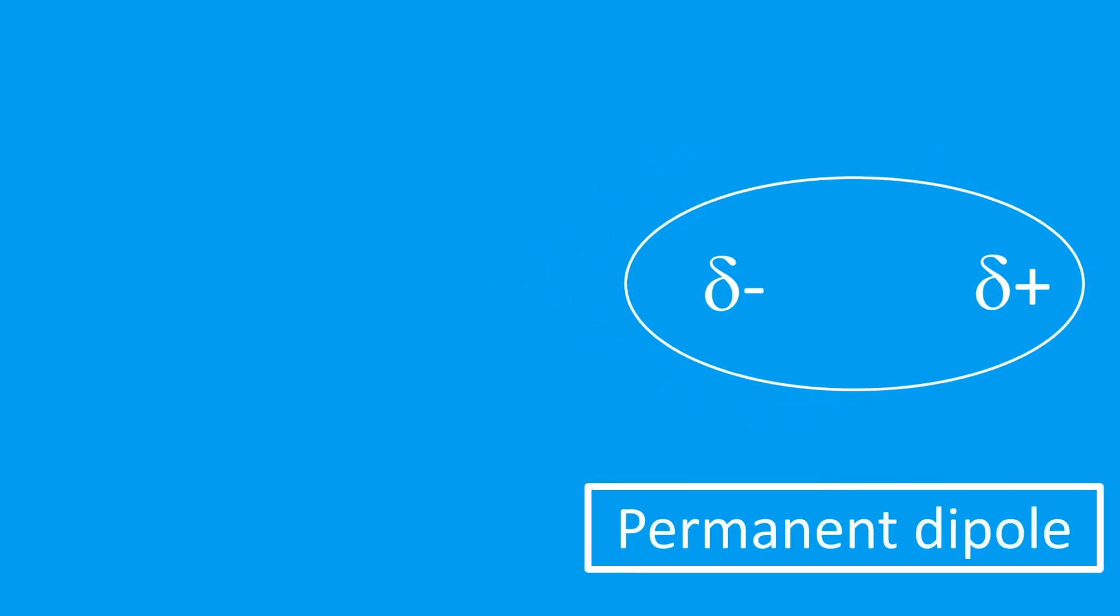So this is said to be a permanent dipole. This molecule is a permanent dipole or has a permanent dipole. The left-hand side as I've drawn it is permanently slightly negative, and the right-hand side is slightly positive.